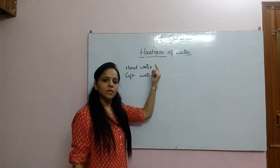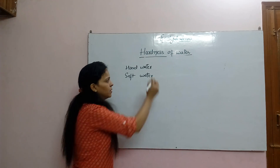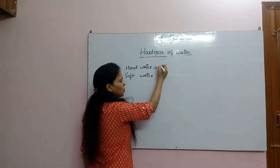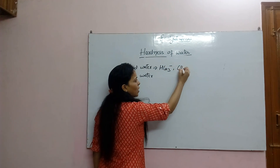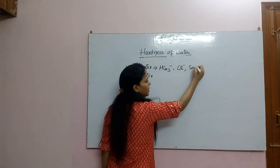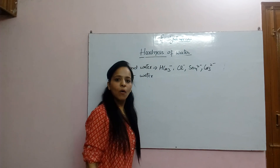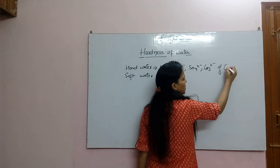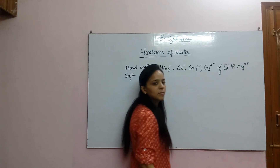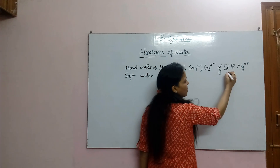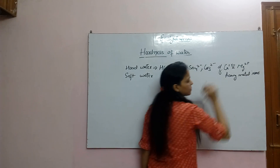Hard water — water in which bicarbonate ions, chloride ions, sulfate ions, and carbonate ions of calcium and magnesium metal ions, or heavy metal ions, are present. Clear?